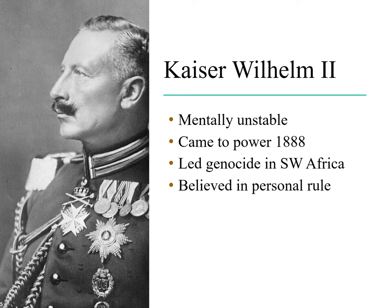He definitely was mentally unstable with violent mood swings. In the lecture about imperialism, we talked about what is now Namibia — German Southwest Africa — where some of the first genocides occurred. He was the one ordering the extermination of groups like the Herero in death camps. That was Kaiser Wilhelm II.